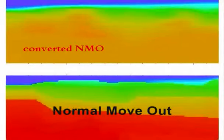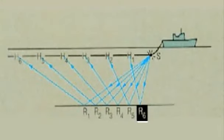Normal move out, or NMO, is a depth correction process. As you move out to the farthest hydrophones, the measured rays get longer, but the depth does not change.